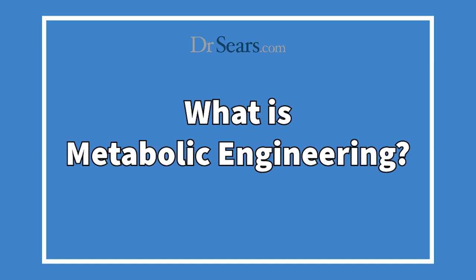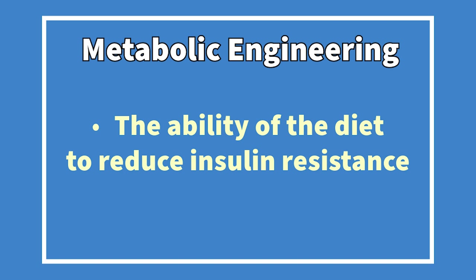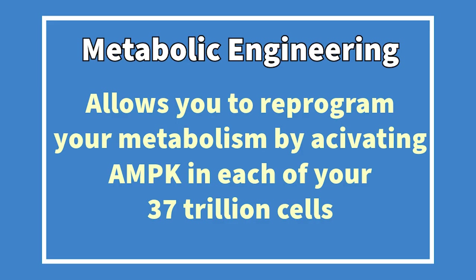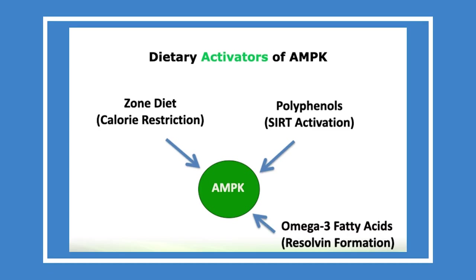This leads us to what exactly is metabolic engineering. Our definition: it is the ability of the diet to reduce insulin resistance. Metabolic engineering allows you to reprogram your metabolism by activating AMPK in each of your 37 trillion cells. There are three different pathways this can be done: one is through calorie restriction — the most powerful way to activate AMPK; another is through adequate intake of polyphenols, which activates enzymes known as sirtuins that also activate AMPK; and finally, omega-3 fatty acids activate AMPK through their production into hormones known as resolvins.